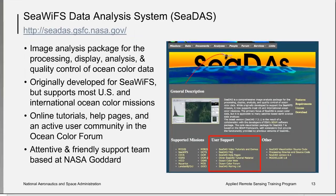The Ocean Color Web website also helps you access the CDAS web page. CDAS was originally developed for the SeaWiFS sensor and derives its name from the SeaWiFS Data Analysis System, but now it supports most US and international ocean color missions. It is a comprehensive image analysis package for the processing, display, analysis, and quality control of ocean color data. CDAS is well supported with online tutorials, help pages, an active user community in the Ocean Color Forum, and a support team based at NASA Goddard. It is freely available.